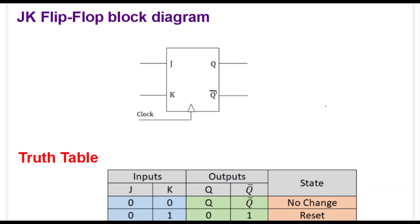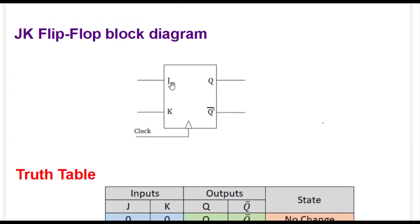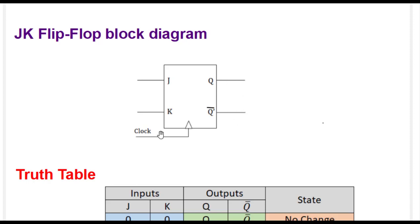This is the block diagram of a JK flip-flop. As we can see, there are two inputs and two outputs. J and K are the inputs, Q and Q-bar are the outputs. The outputs are always opposite of each other - if Q is zero, Q-bar becomes one; if Q becomes one, Q-bar becomes zero. And we have a clock.